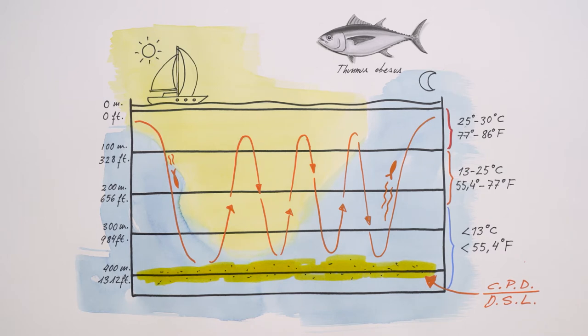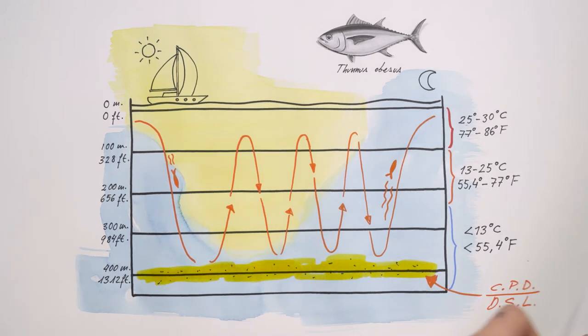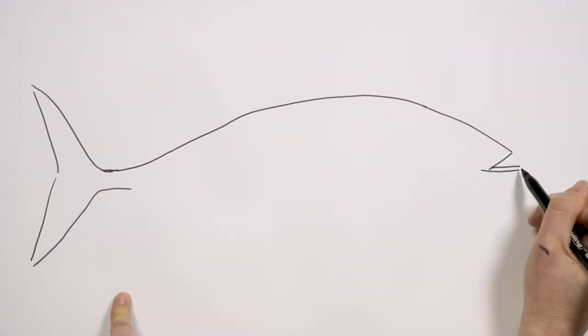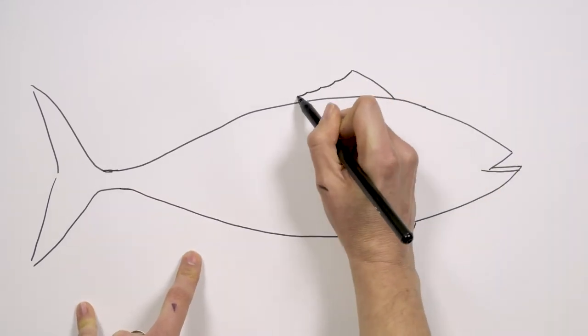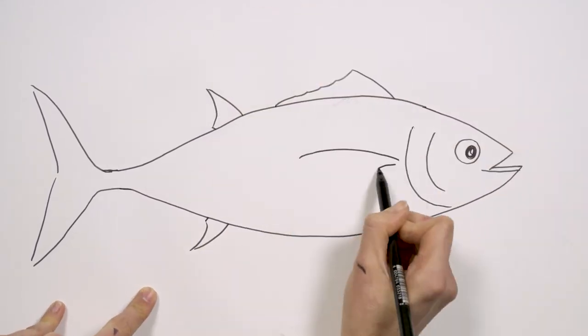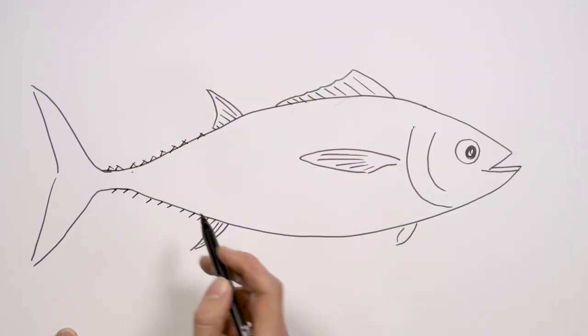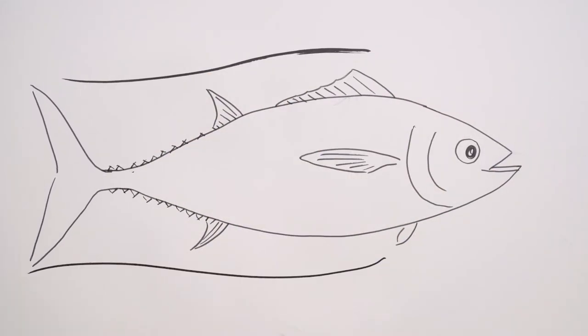And before we finish, we need to answer a key question. How can tuna dive so deep? It's not a simple thing to do, not even for a fish. This is thanks to three things. First, their body shape is a hydrodynamic marvel that slides easily through the water. Second, they have the highest proportion of red muscle of any fish, which allows them to swim longer without getting tired.